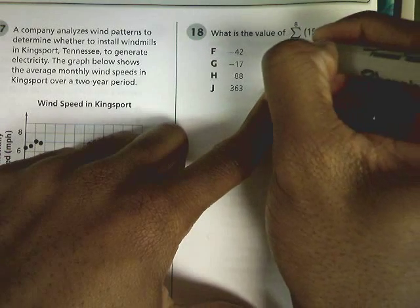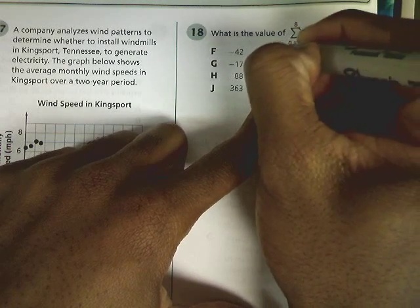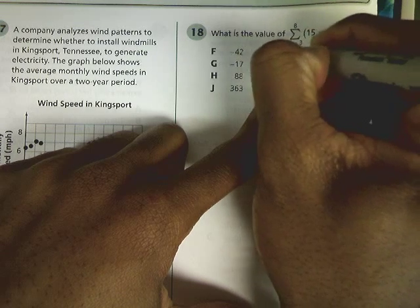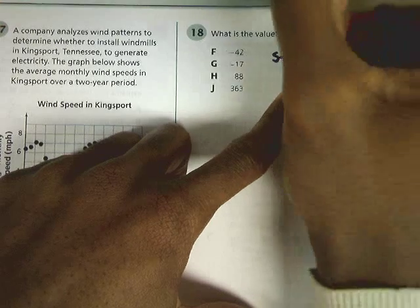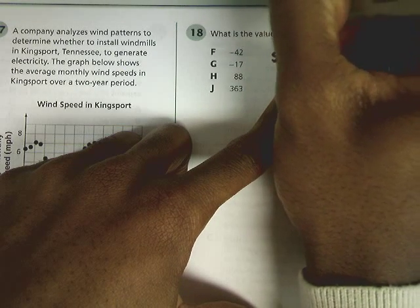Well, the way that you look at this is this number here on the bottom, the n equals 3, that's where you're supposed to start. And the number on the top, 8, that's exactly where we're supposed to finish.